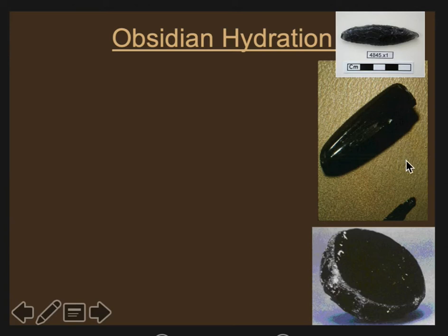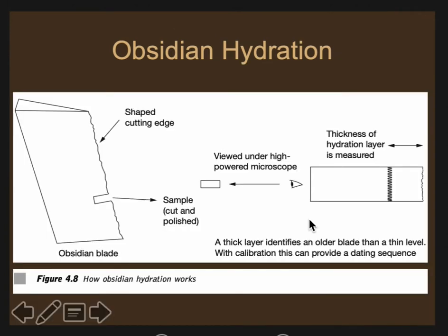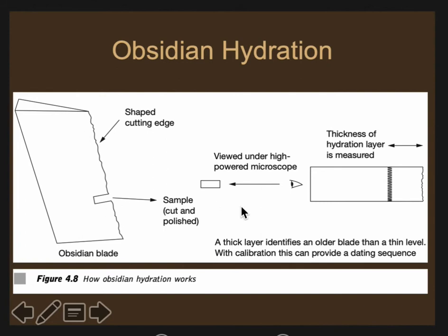Can you actually date an obsidian tool? There's a system called obsidian hydration. When the edge of that tool is made and then left in the ground, slowly obsidian will absorb water molecules, which will penetrate slowly inwards. If you cut a small sample of the obsidian and look at it under a special microscope, that water layer will actually show up. If you measure the water layer, you can assume the thicker the layer, the older it is — it's been in the ground longer and had more time to absorb water. You have to figure out the rates of hydration in the area, and then you can estimate when that tool was made.